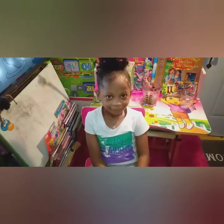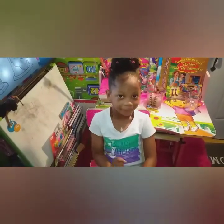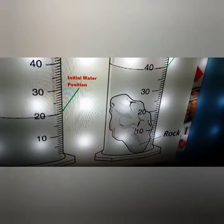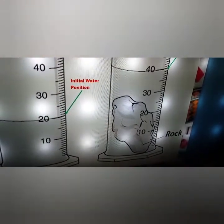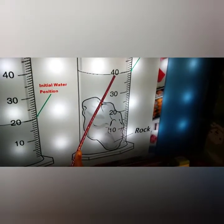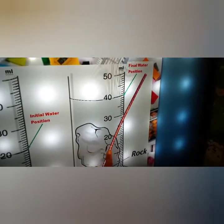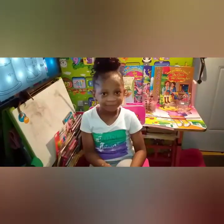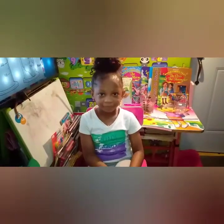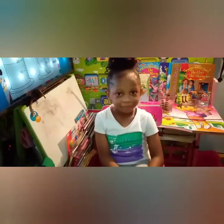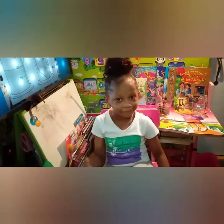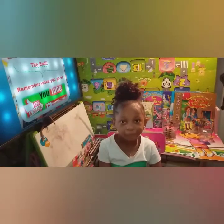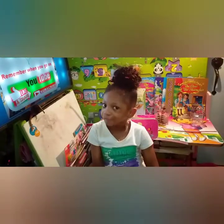Let's do this exercise together. The initial water position is 20 milliliters. After a rock was placed in it, it rose to 40 milliliters, which is the final water position. So what is the volume for the rock? 40 take away 20 is 20, so it is 20 milliliters or 20 cubic centimeters. We have now come to the end of our lesson. I hope you learned something.